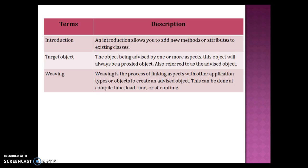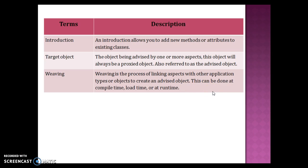The next terminology is Introduction. Introduction allows you to add new methods or attributes to an existing class. So suppose you have a designed aspect class and you want to introduce new advice within that class without changing the class — that is where Introduction comes into the picture. Next is Target Object — an object being advised by one or more aspects. This object will always be a proxy object, also referred to as the advised object. Finally, we have Weaving — the process of linking aspects with other application types or objects to create an advised or proxy object. This can be done at compile time, load time, or runtime.